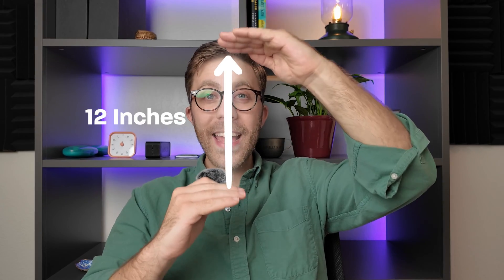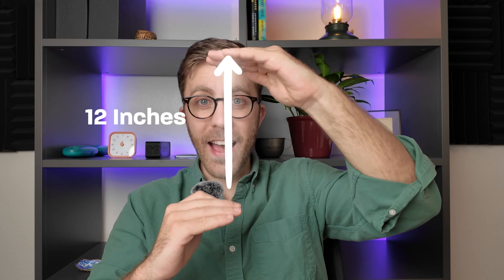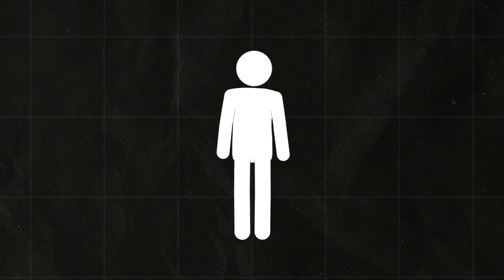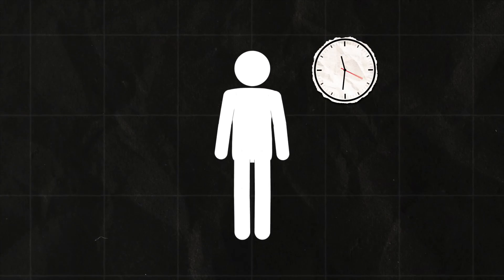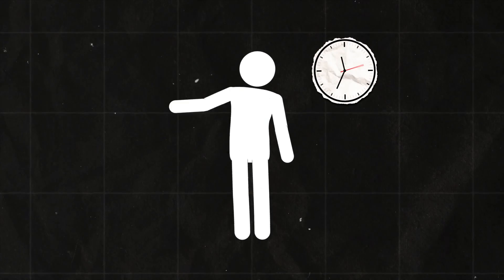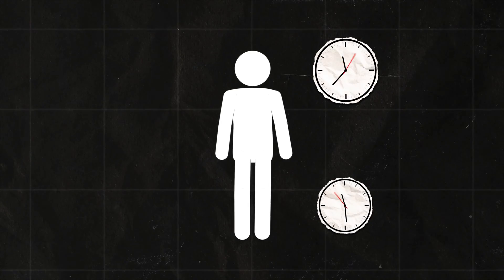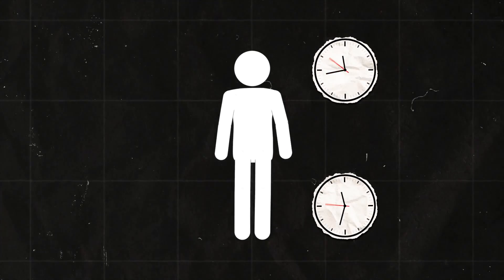So the further away you get from Earth, the less gravity there is, and the faster time moves. In 2010, scientists even showed that we can measure differences in the speed of time at just 12 inches of elevation.